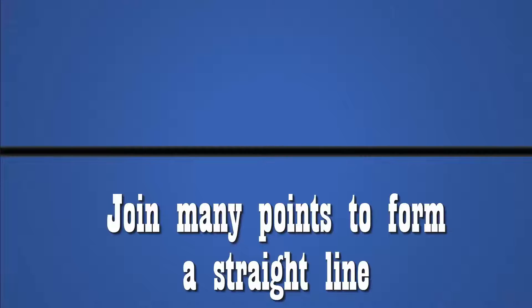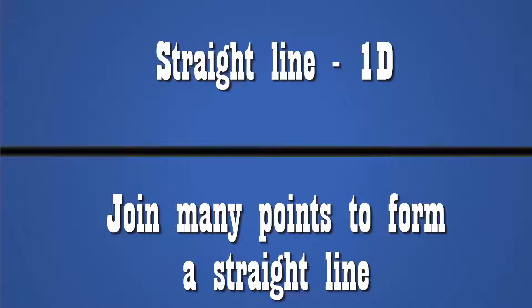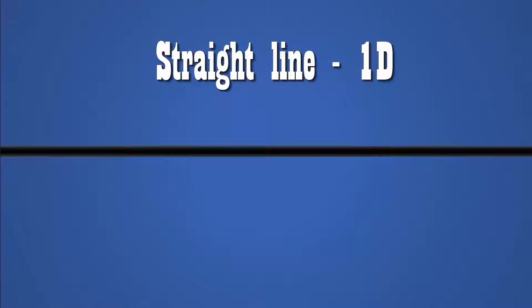To get the first dimension, we have to put together a series of points forming a straight line. This straight line now represents the first dimension. In this one-dimensional world, you only have two ways to travel — in this case, right and left. And there can only be two kinds of objects: a point and a line segment.